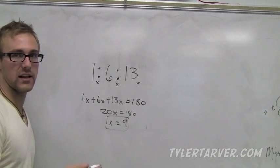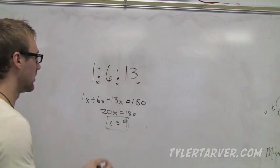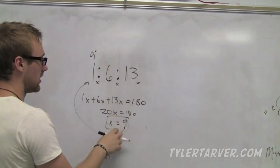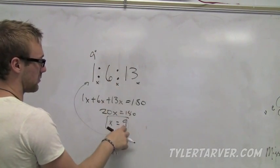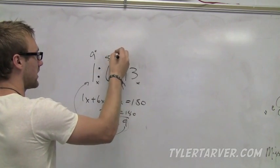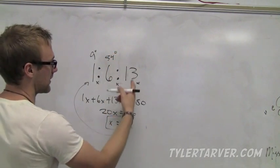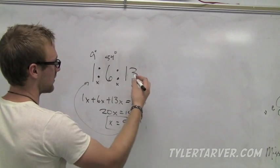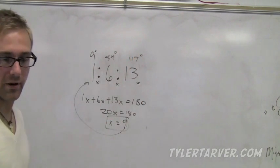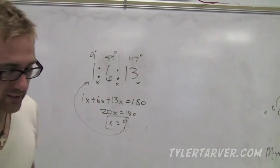Then we can find, like say they're asking for the smallest angle, you just plug that in. 1 times 9, so that angle is 9 degrees. 6x is 6 times 9, so that's 54 degrees. And 9 times 13 is 117 degrees. If that's wrong, don't worry about it. You're not a math teacher, you can't tell me what to do.